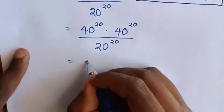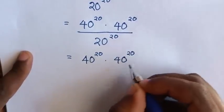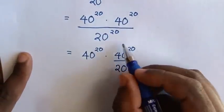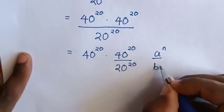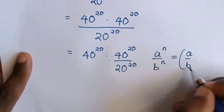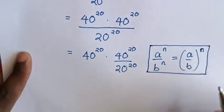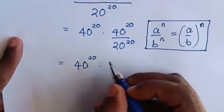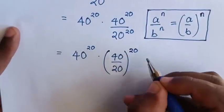This will be equal to 40 power 20 times 40 power 20 over this 20 power 20. In here it will be division of exponents, so we will apply this rule: a power n over b power n — because here is the same power but different bases — so this will be equal to a over b, bracket, power n. So this will be equal to 40 power 20 times 40 over 20, bracket, power of 20.